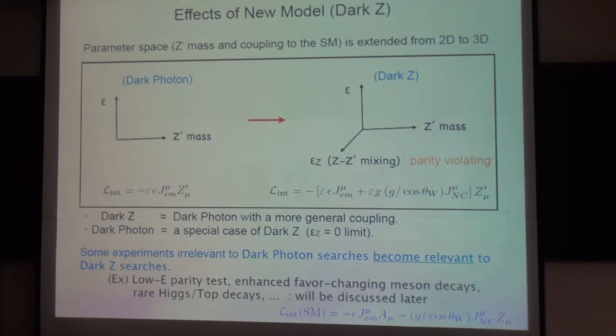The effect of the new model is that the parameter space is extended from 2D to 3D. In the original dark photon model, you need only two parameters: the G prime mass and the kinetic mixing angle epsilon. In the dark Z model, you need another parameter, epsilon_Z, to describe the Z and G prime mixing. So you can see dark Z is dark photon with more general coupling. The original dark photon model is a special limit of dark Z when epsilon_Z goes to zero. There are some experiments irrelevant to dark photon searches which are now relevant to dark Z searches, including low energy parity tests, enhanced flavor changing meson decays, rare Higgs decays, and rare top decays.